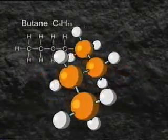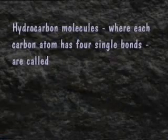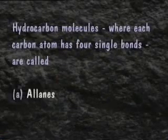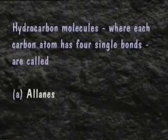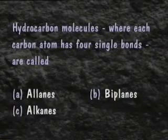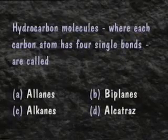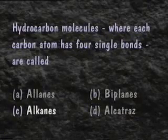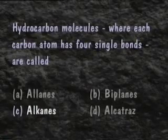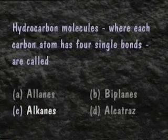So as they all end in -ane, what do you think this little family is called? A. All-aanes. B. Biplanes. C. Alkanes. D. Alcatraz. The answer is C. Hydrocarbon molecules where each carbon atom has four single bonds are called alkanes.